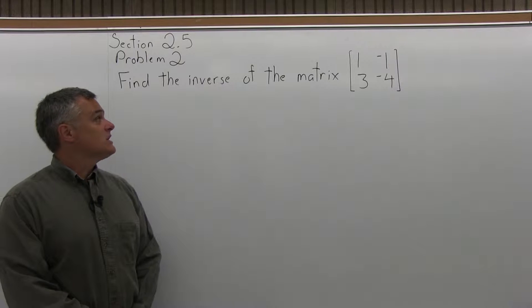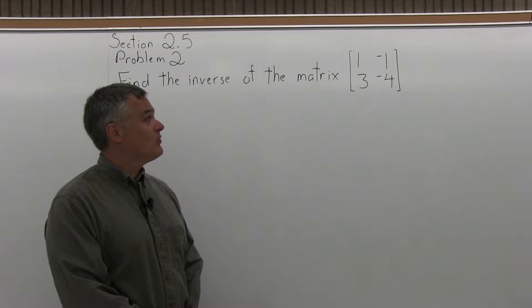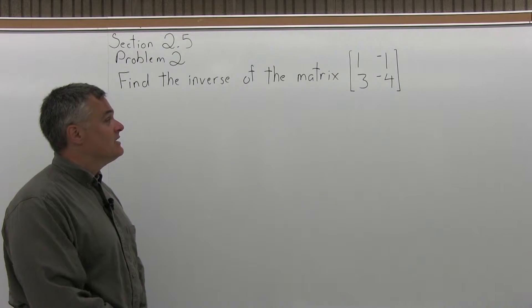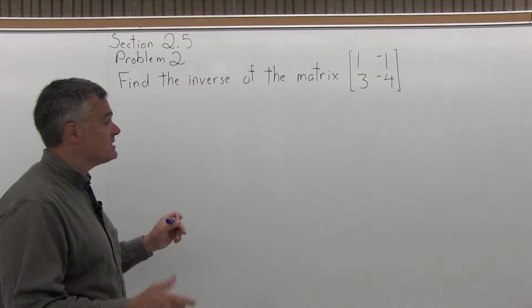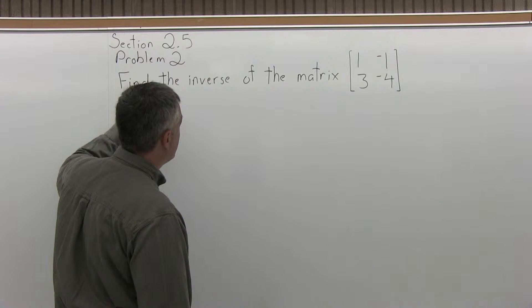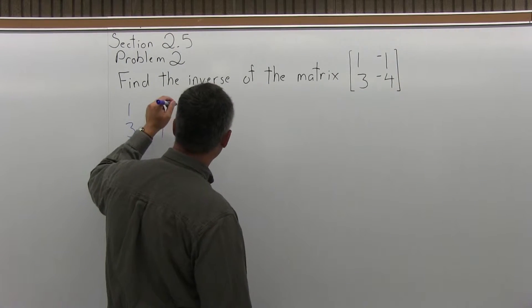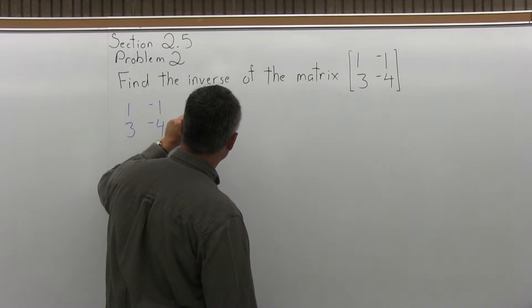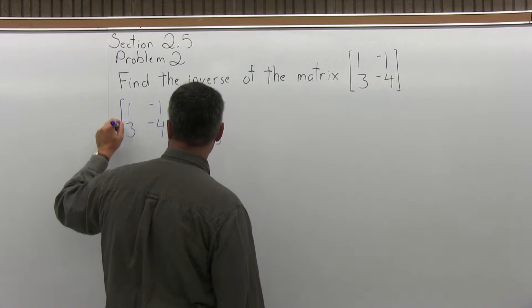It says find the inverse of the matrix, and it's a smaller matrix. The top row is 1, negative 1, and the second row is 3, negative 4. So to find the inverse of this matrix, what we want to do is set up a double matrix. You're going to write the matrix that's given to us next to an identity matrix of the same size, and make a big double matrix with this.